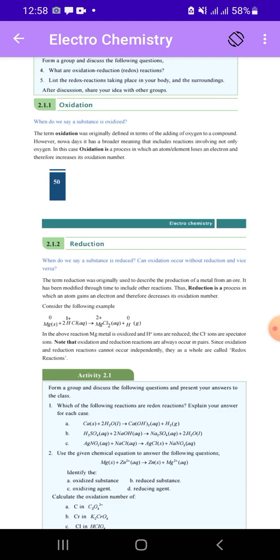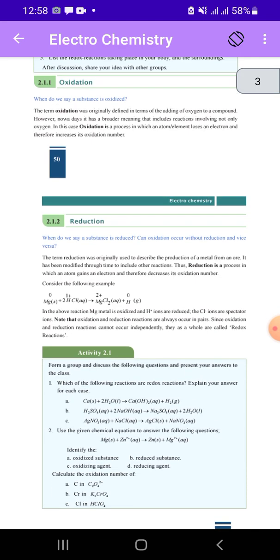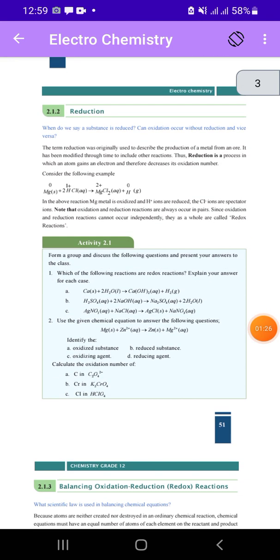In this case, oxidation is a process in which atoms or elements lose electrons, therefore increasing the oxidation number. This is called oxidation. Topic 2.212 Reduction.